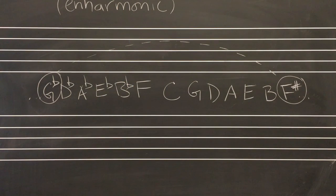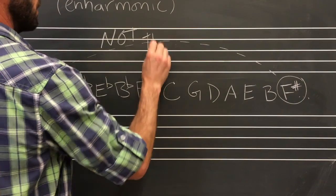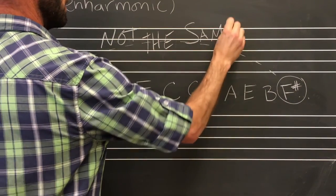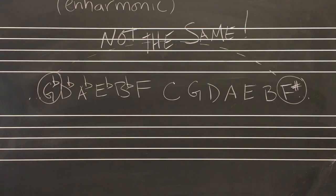Enharmonic equivalent means having the same sound, and can refer to a single pitch or an entire scale. Enharmonic equivalents are tones that have different letter names but sound the same. They are the same button on the piano keyboard.